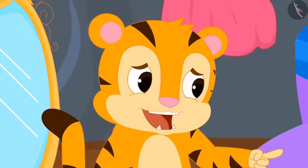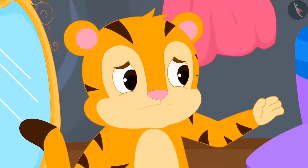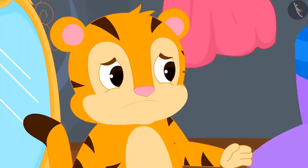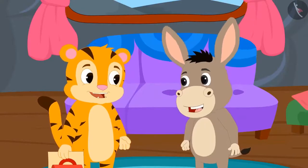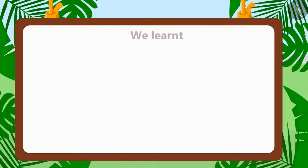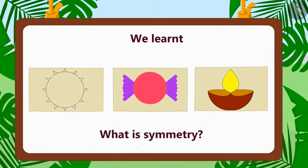'But what about the secret of my magic mirror?' Shere Khan said sadly. 'Don't worry, your secret is safe with me.' Bola winked at Shere Khan and they both began to laugh. So children, in this lesson we learnt what is meant by symmetry. In the next video we will learn more about this with some examples.